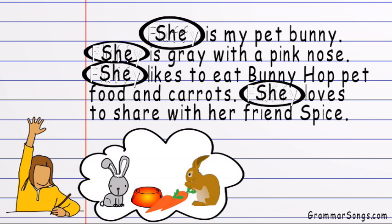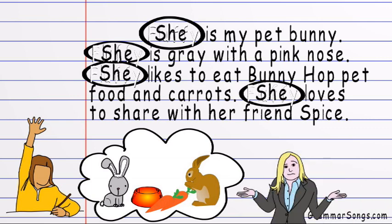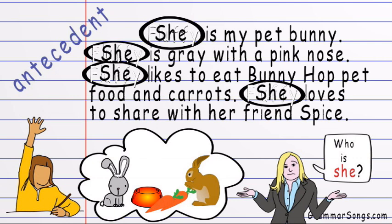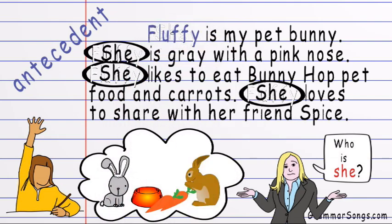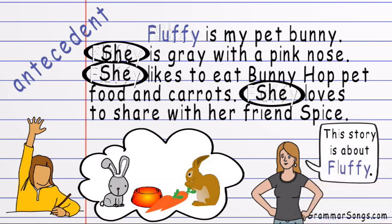She is my pet bunny. She is gray with a pink nose. She likes to eat bunny hop pet food and carrots. She loves to share with her friend Spice. Who is she? But if you make sure to place an antecedent — a noun or proper noun — ahead of your pronouns, your writing is clear and your reader understands. In this case, the subject being referred to is Fluffy, so Fluffy is my antecedent: Fluffy is my pet bunny. She is gray with a pink nose. She likes to eat bunny hop pet food and carrots. She loves to share with her friend Spice.